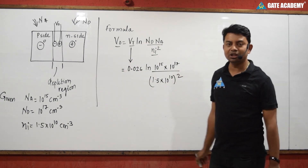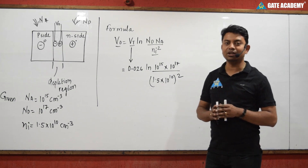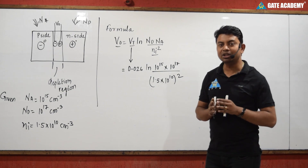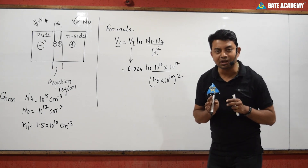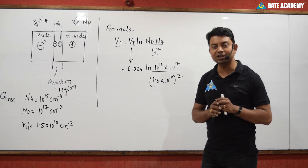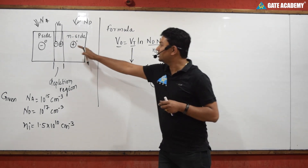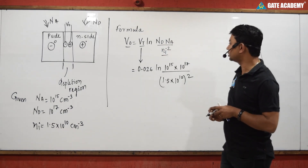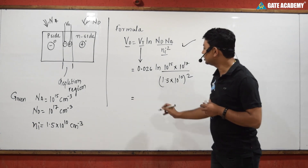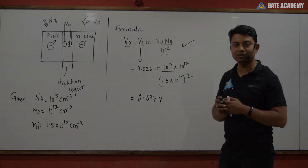So the built-in potential is the potential developed across the depletion region of the diode at its equilibrium condition — when no forward or reverse voltage or temperature change is applied. Using the formula with all given values, the built-in potential V0 is equal to 0.697 volts. This is the correct answer for this question.